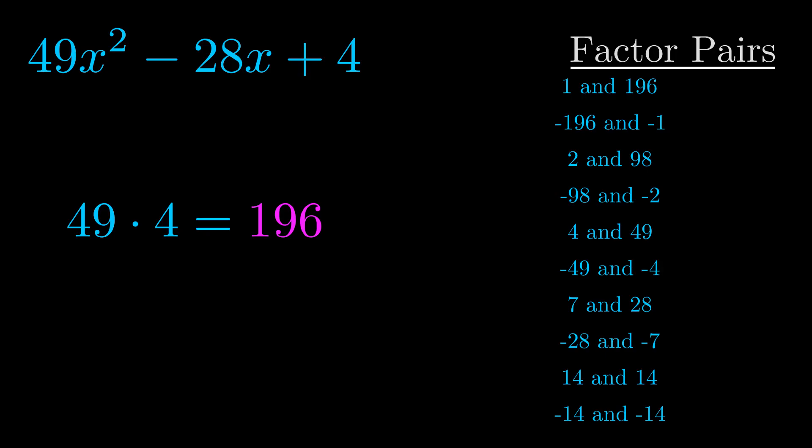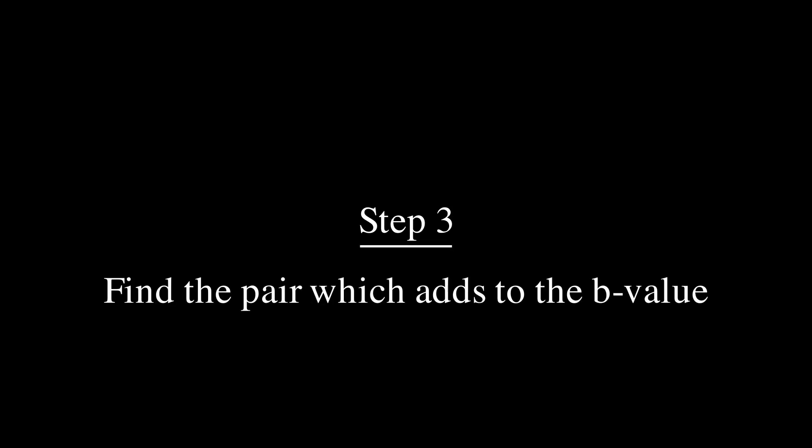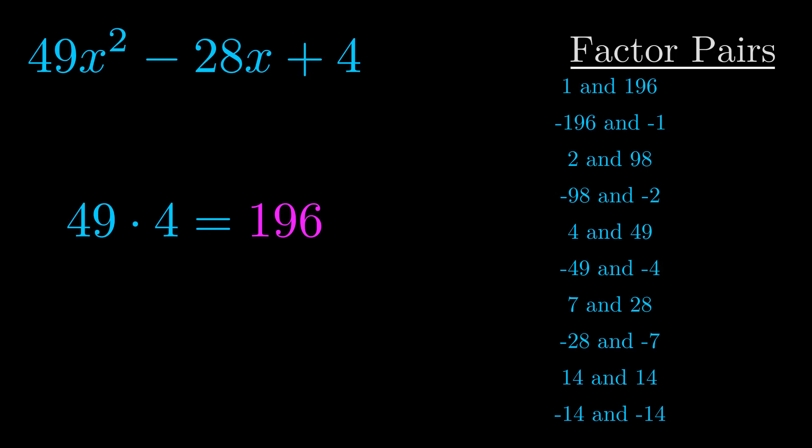Once you have these factor pairs, the goal is to find which of these pairs adds to the b value. The b value is the coefficient on the x term—that's the middle term, the one that we haven't done anything with yet.